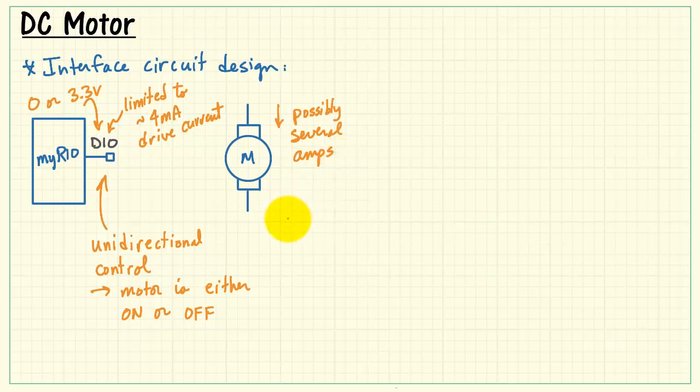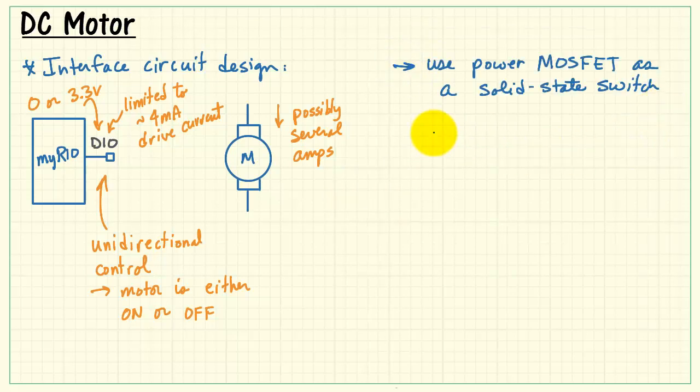The motor can draw possibly several amps. Therefore, we need some kind of an interface between the two, and a power MOSFET works as a solid-state switch.